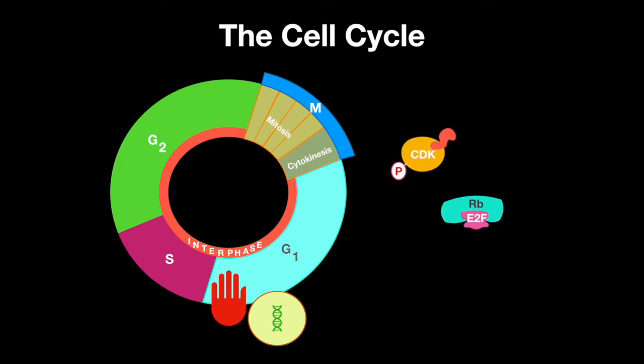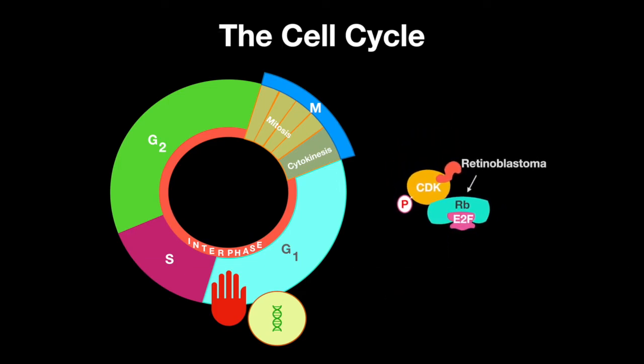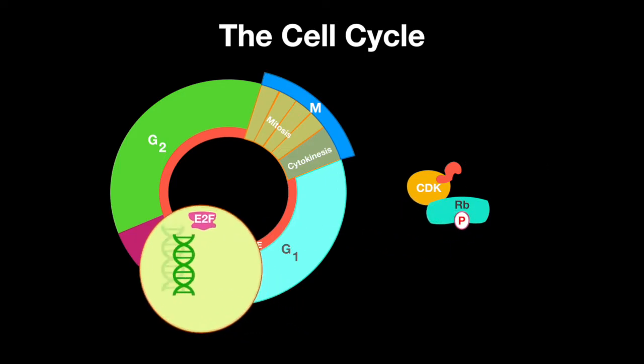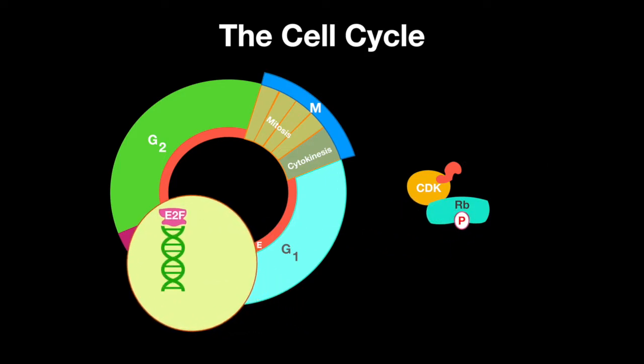When retinoblastoma gets phosphorylated, it loses the transcription factor, allowing the cell to proceed into the DNA synthesis (S) phase.